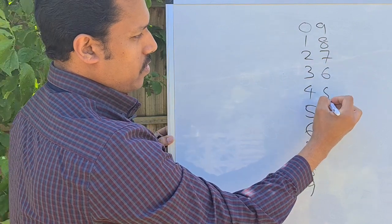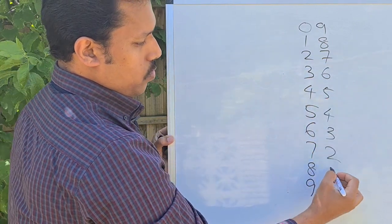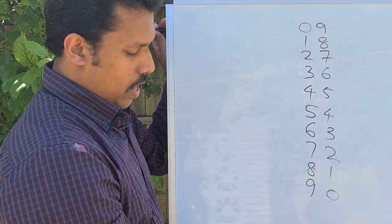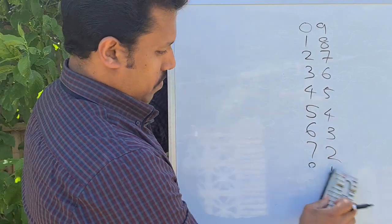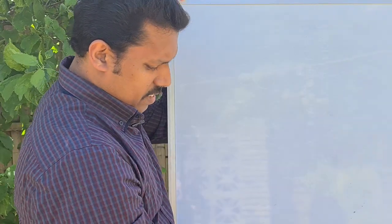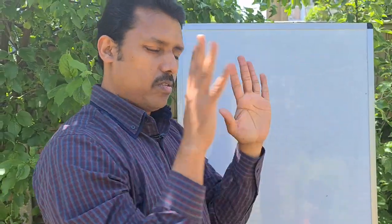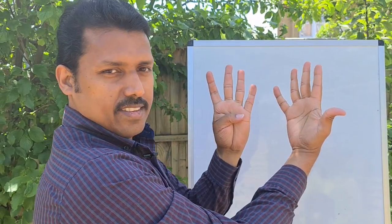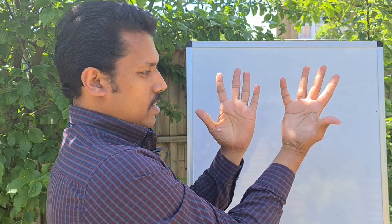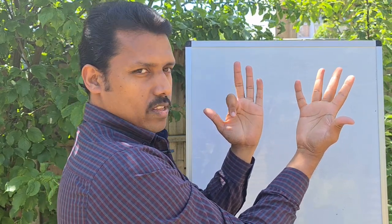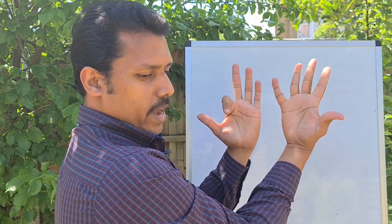I'll show you another trick to know the multiples of nine. It's an easy trick using fingers. Just take your fingers like this, hold it like this. So one times nine, one nine: nine. Unfold it. Fold the second finger. So two nines: one eight.